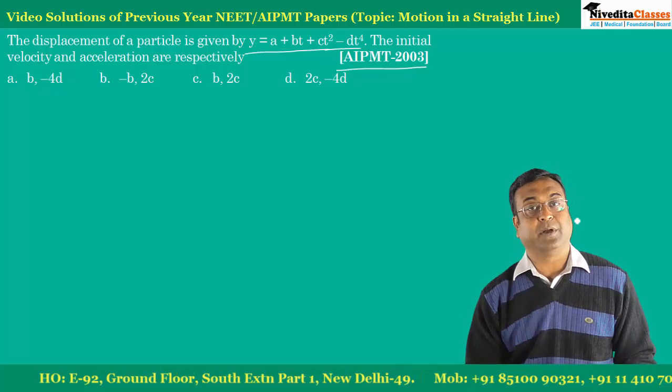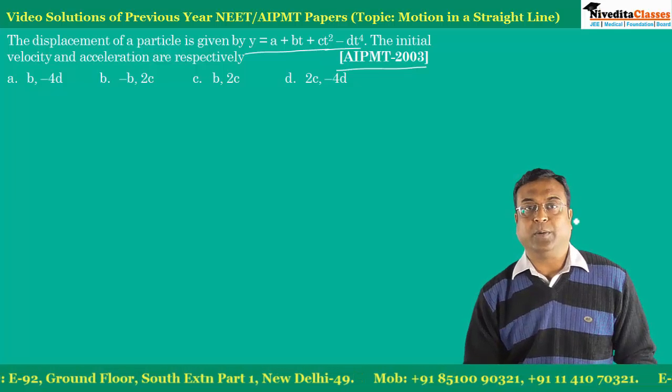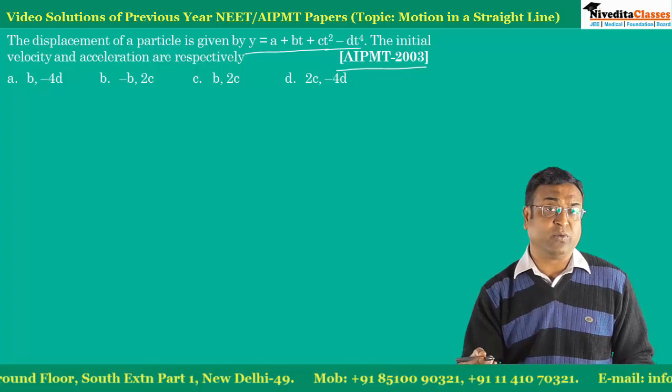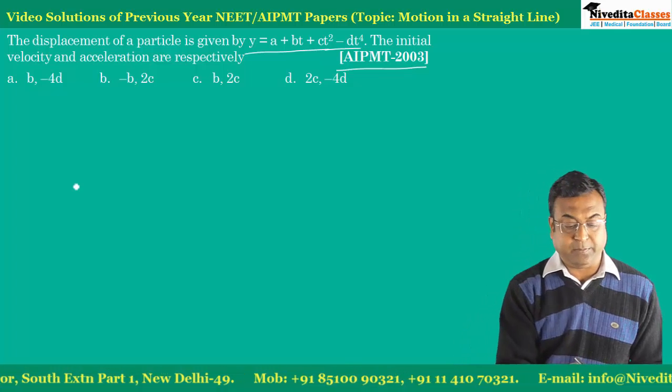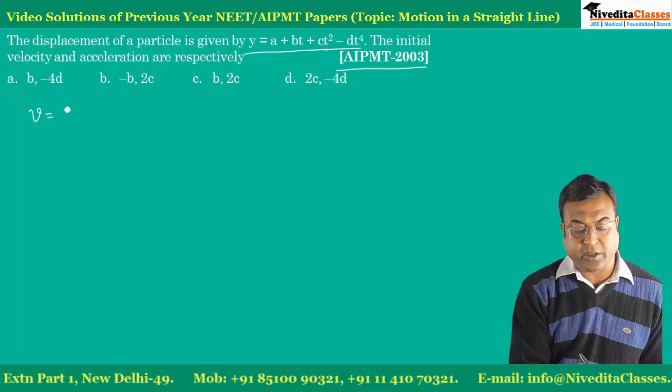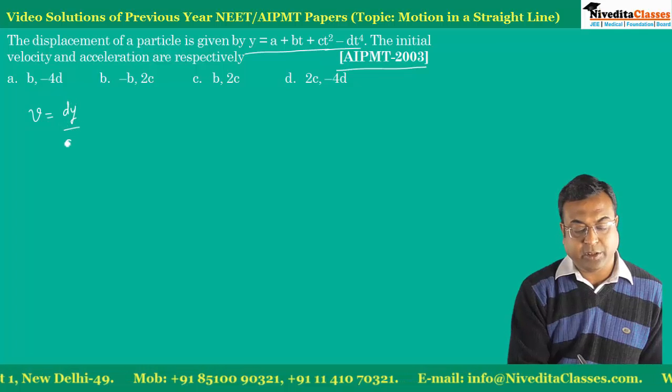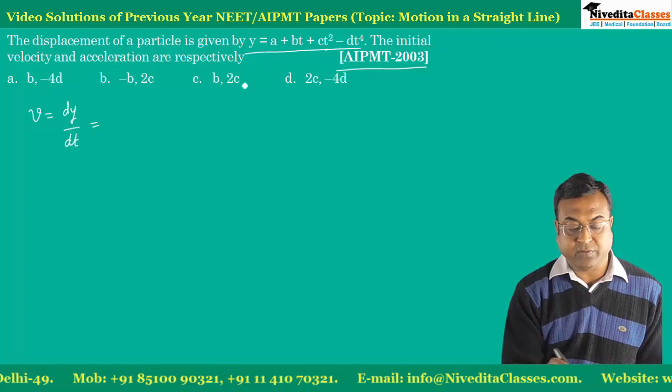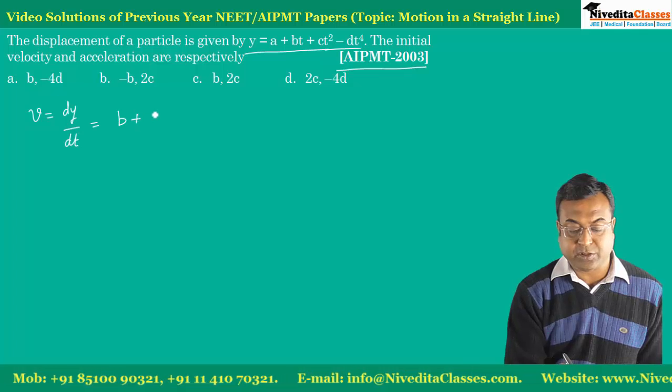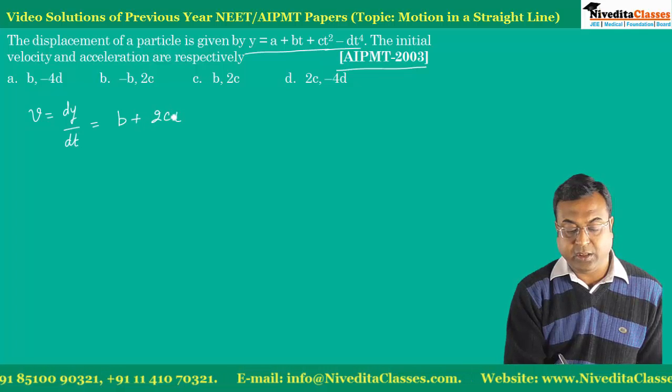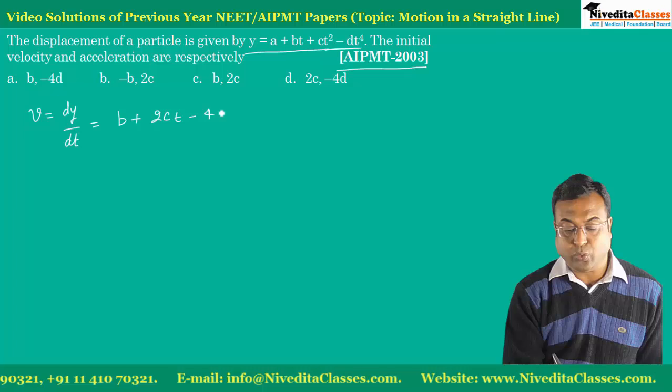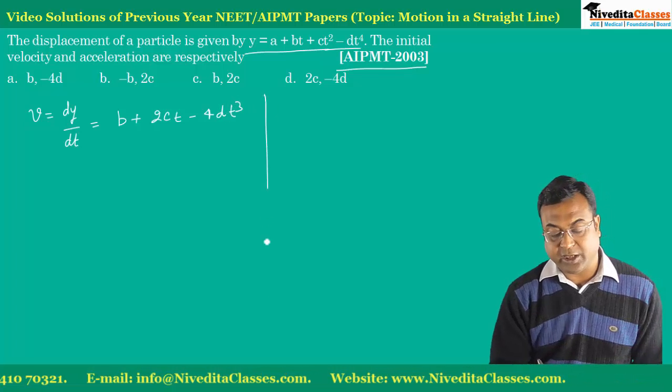Initial means when time is zero. The velocity is the derivative of displacement with respect to time. So we can say v is dy by dt. Taking its derivative, we get b plus 2ct minus 4dt cube.